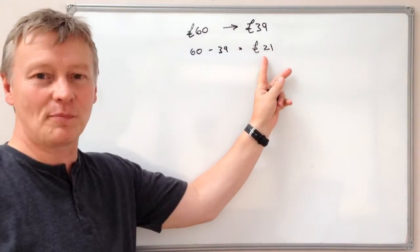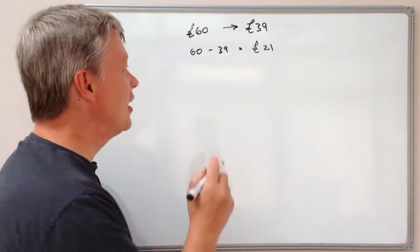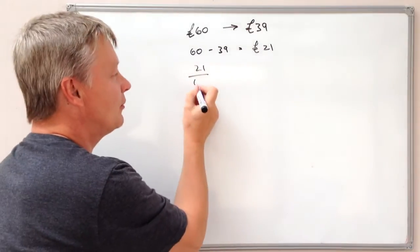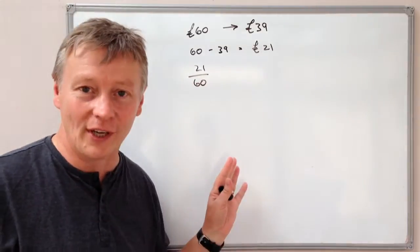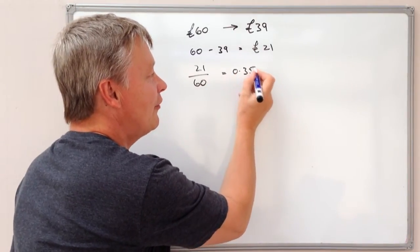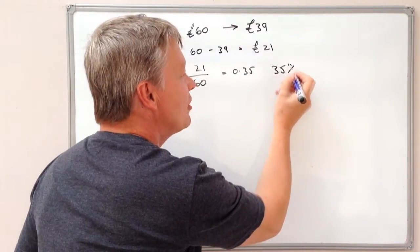Well if it's reduced by £21, in terms of a percentage change, it's going to be 21 divided by the original which is 60. So the reduction is going to be 0.35, or if you prefer, 35%.